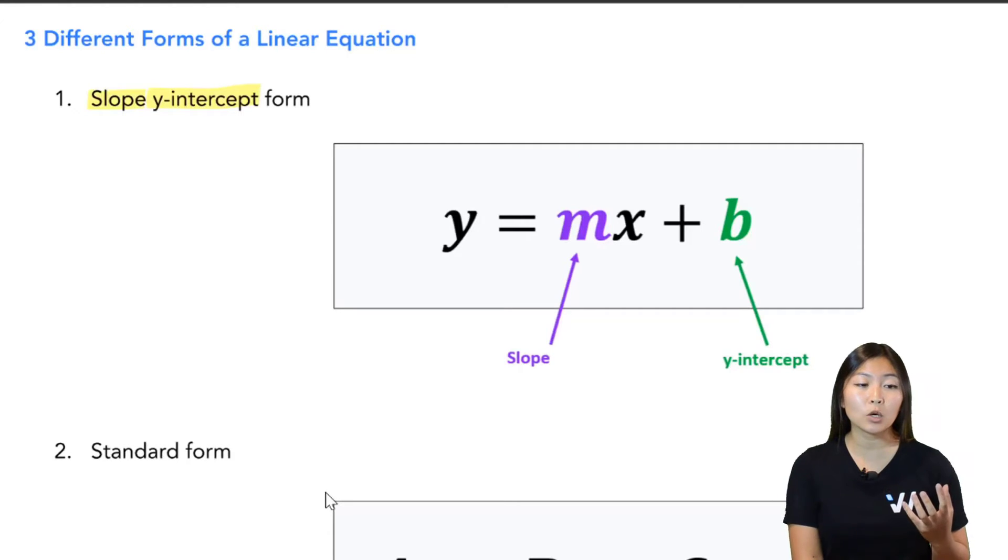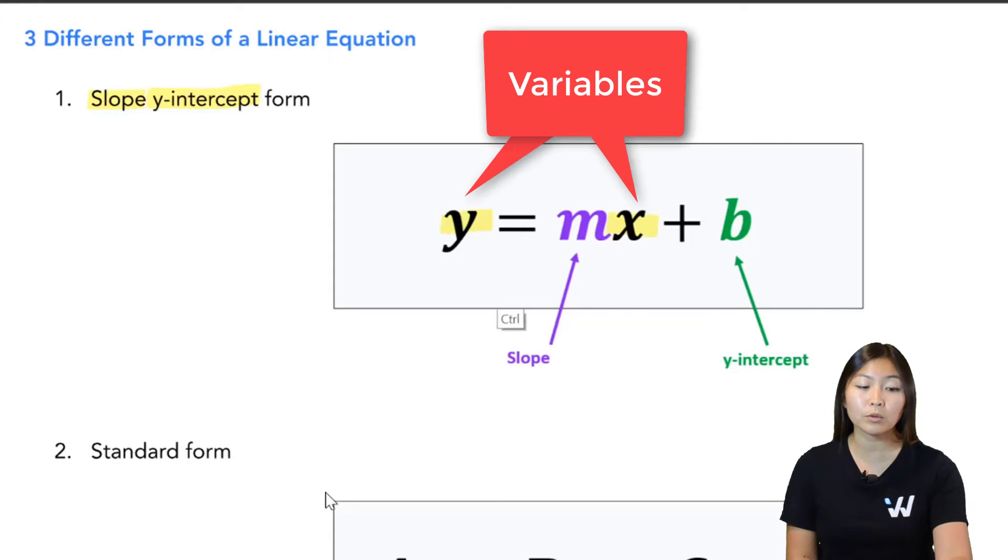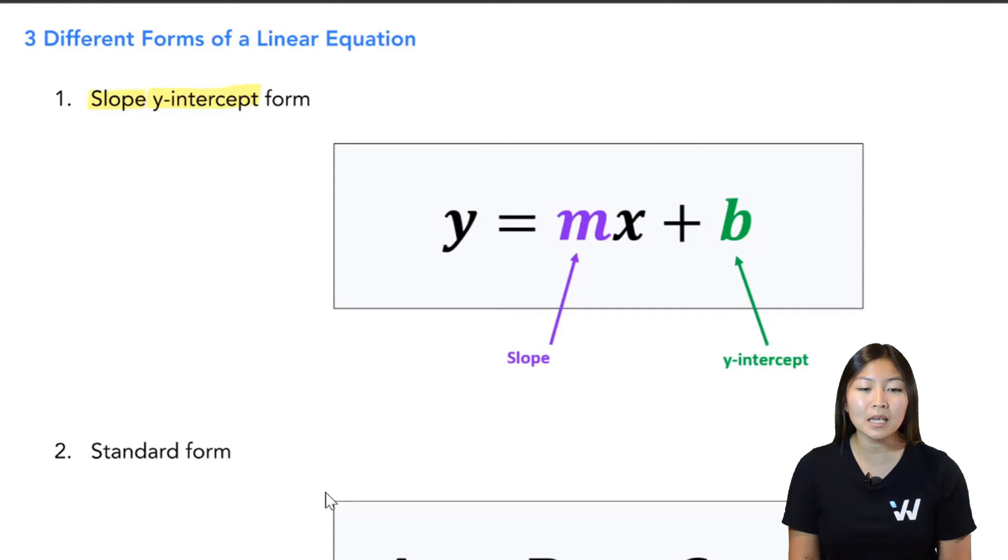Now be very careful. In this equation, x and y are variables so they're going to stay as x and y, but the m and the b, these are numbers. So this m is a number and this b is also a number.